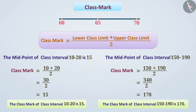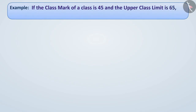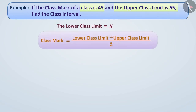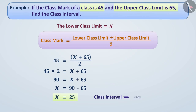Example: If the class mark of a class is 45 and the upper class limit is 65, find the class interval. Here the class mark is 45 and the upper class limit is 65. Let x be the lower class limit. We can say that the class mark 45 equals the sum of lower class limit x and upper class limit 65 divided by 2. By simplifying, we get the lower class limit x equal to 25. In this way, the class interval is 25 to 65.